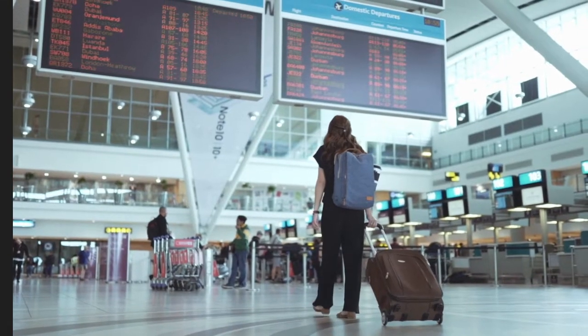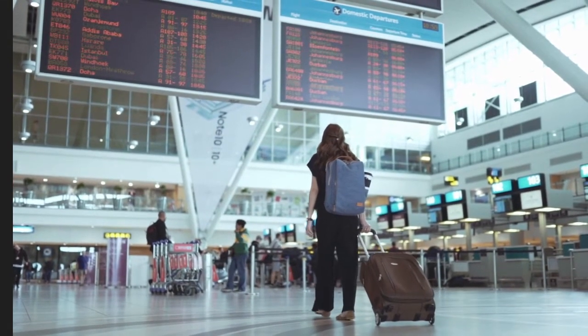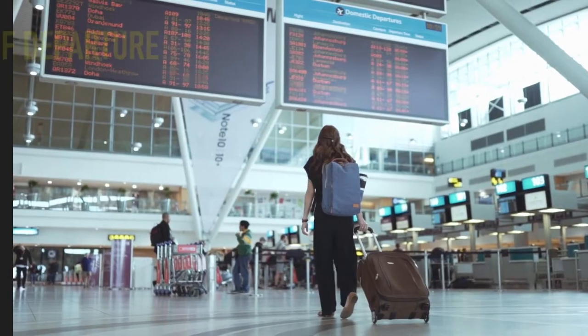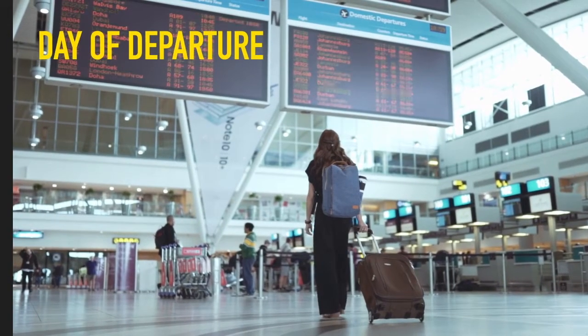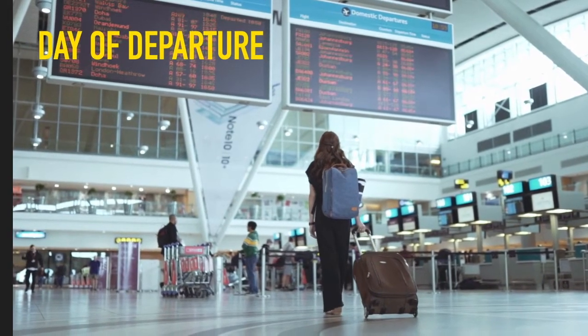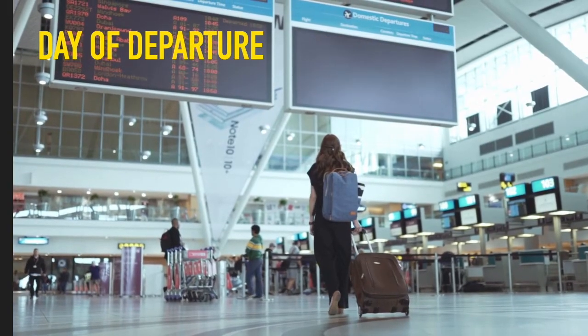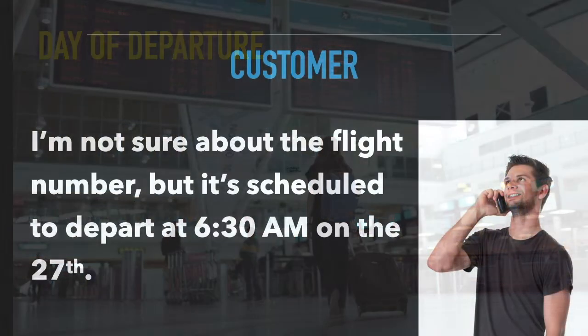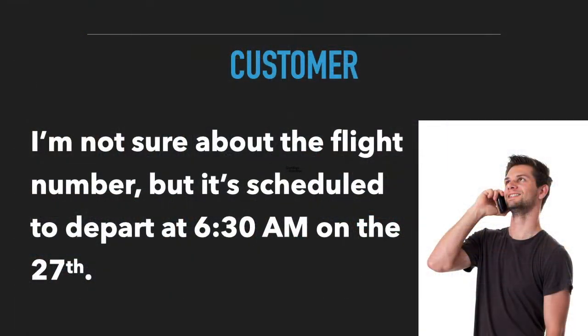Day of departure is the day you are leaving on a trip. I'm not sure about the flight number, but it's scheduled to depart at 6:30 a.m. on the 27th.